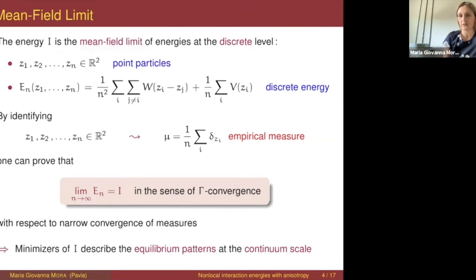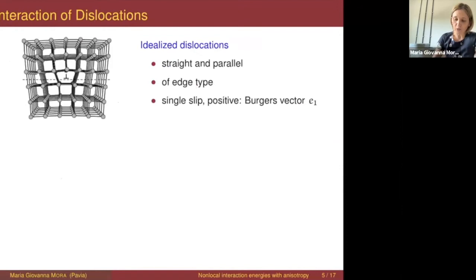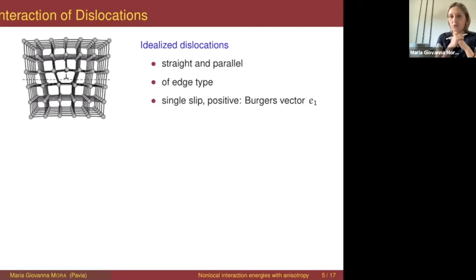Now let me say a couple of words about these locations and the physical motivation behind this specific problem. These locations are line defects — one-dimensional defects in the crystalline structure of a metal. They are very much studied by both mathematicians and mechanicians because they are considered to be one of the main mechanisms for producing plastic deformations, permanent deformations in metals.